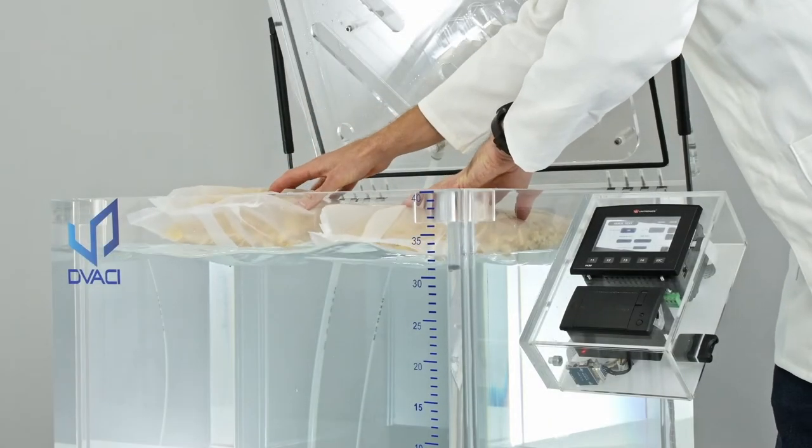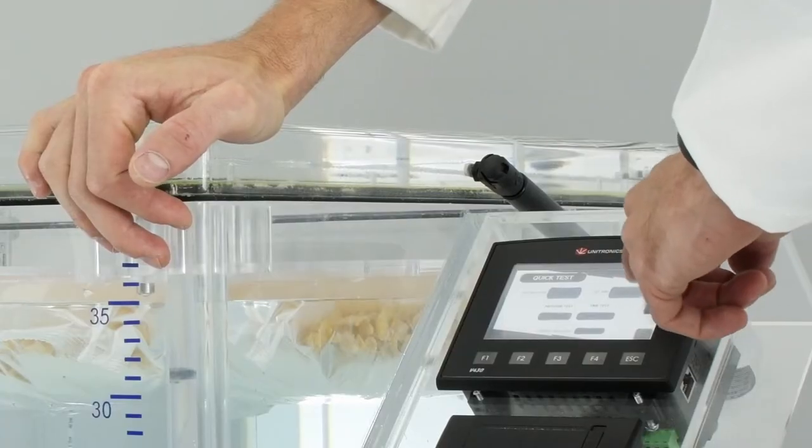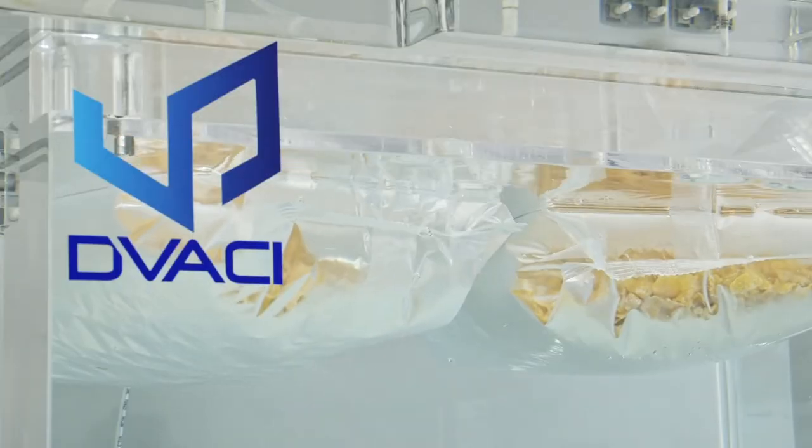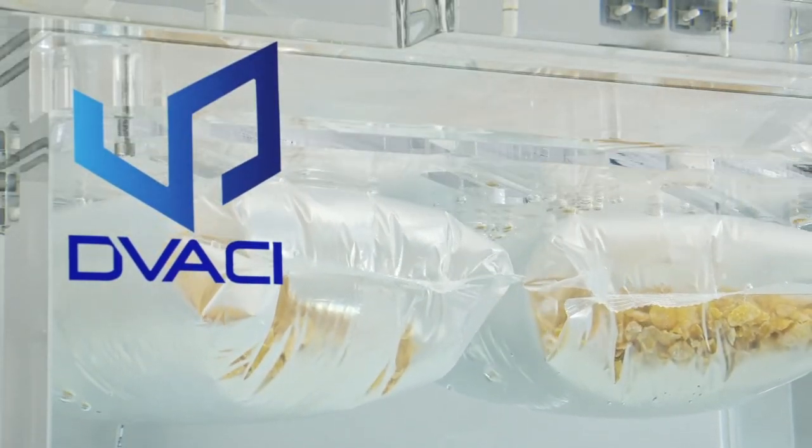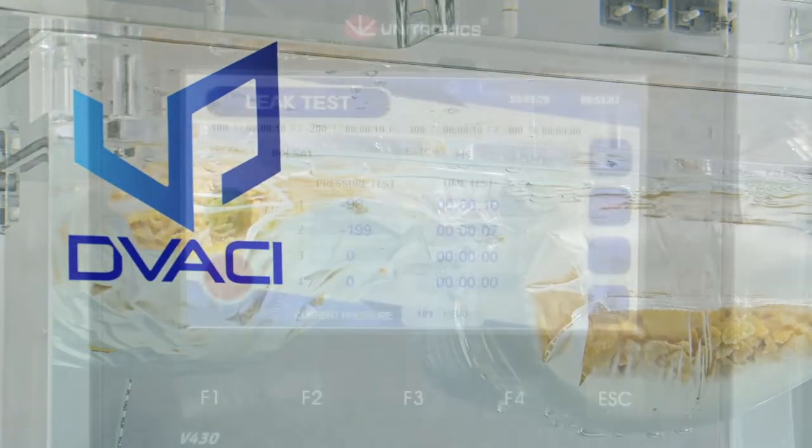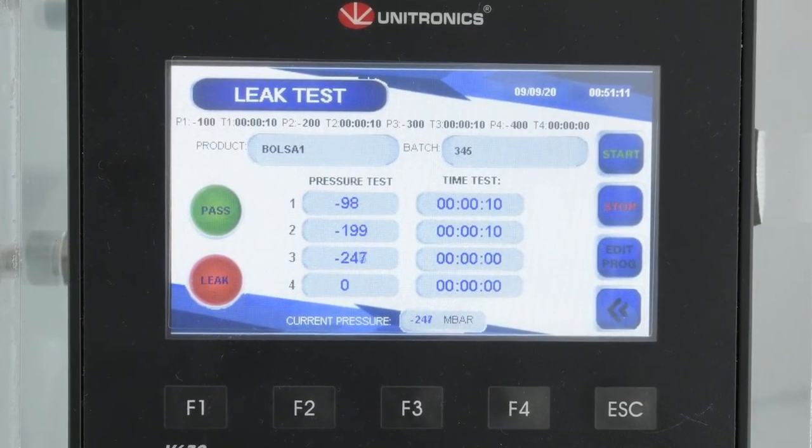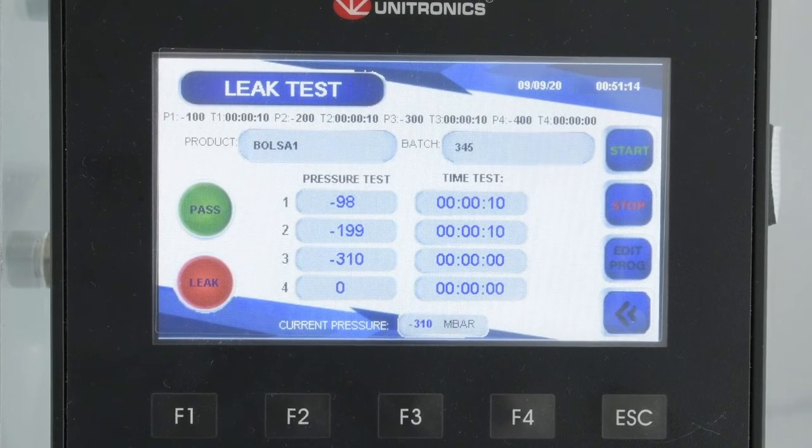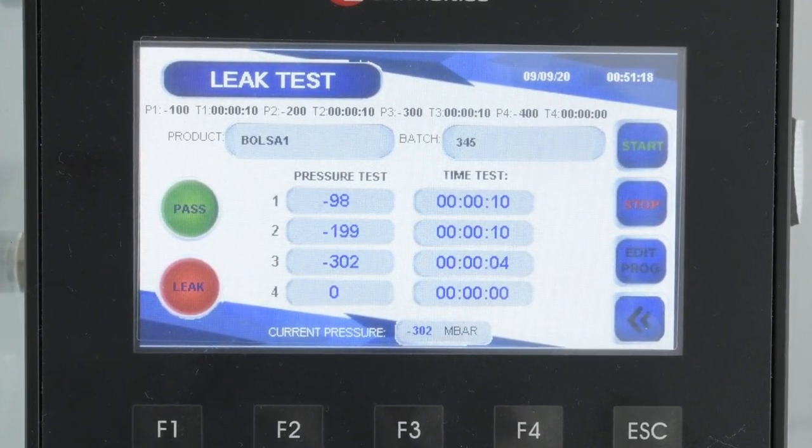We recommend using different stages of vacuum to ensure that all possible points of failure are accounted for. There is a possibility that a package starts leaking at, let's say, minus 100 millibar. We should maintain this vacuum level for at least 30 seconds. If there is no visible leak, move on to the next vacuum stage, each time getting closer to the maximum vacuum level previously determined.